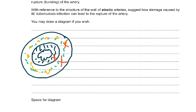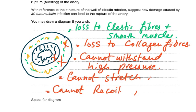The elastic tissue is destroyed, so it cannot stretch or expand, leading to overstretching or overexpansion and no recoil. Rupture of the artery can only take place if there is damage to the collagen, which provides strength. So: loss of elastic fibers and smooth muscle, loss of collagen fibers, cannot withstand high pressure, cannot stretch, cannot recoil — all contribute to arterial rupture.